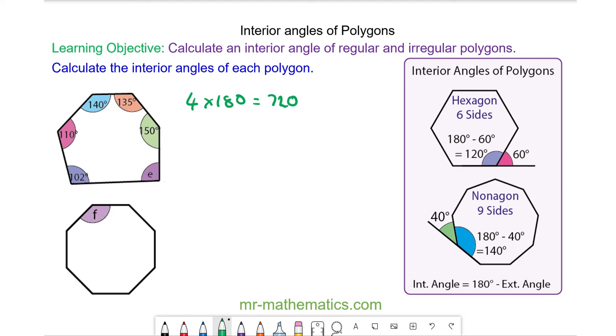So when we add up all 6 interior angles we have a sum of 720 degrees.